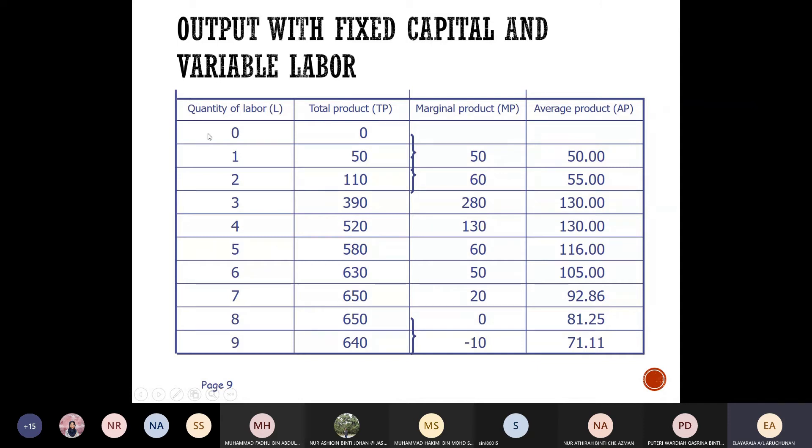All right, now say this is your quantity of labor. So there is zero labor, and there is total product zero. Nothing in there. So marginal product is nothing, you cannot fill it in because this is based on the information you obtain from these two things, as well as the average products.